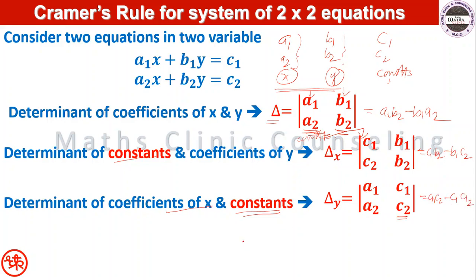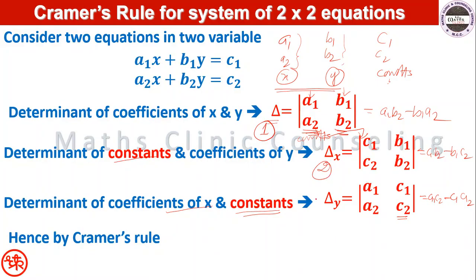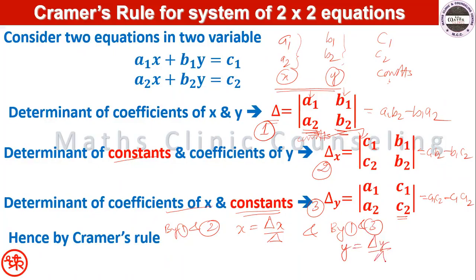Hence by Cramer's rule, we have three determinants: delta, delta_x, and delta_y. By combining these: x is equal to delta_x divided by delta, and y is equal to delta_y divided by delta. This is Cramer's rule for the linear system of 2 by 2 equations.